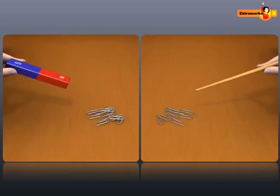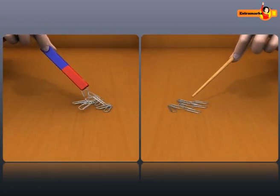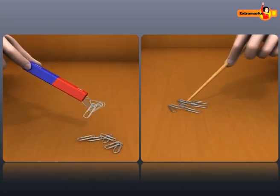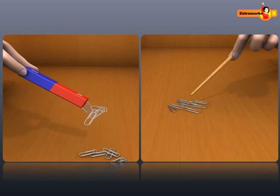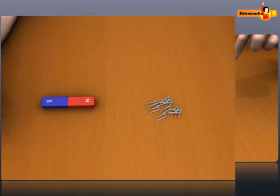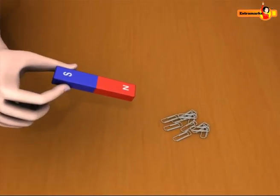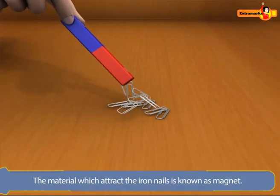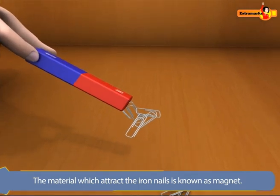Here we can see that some materials can attract iron nails while some cannot. You must be wondering why it is so. The material which attracts the iron nails is known as a magnet.